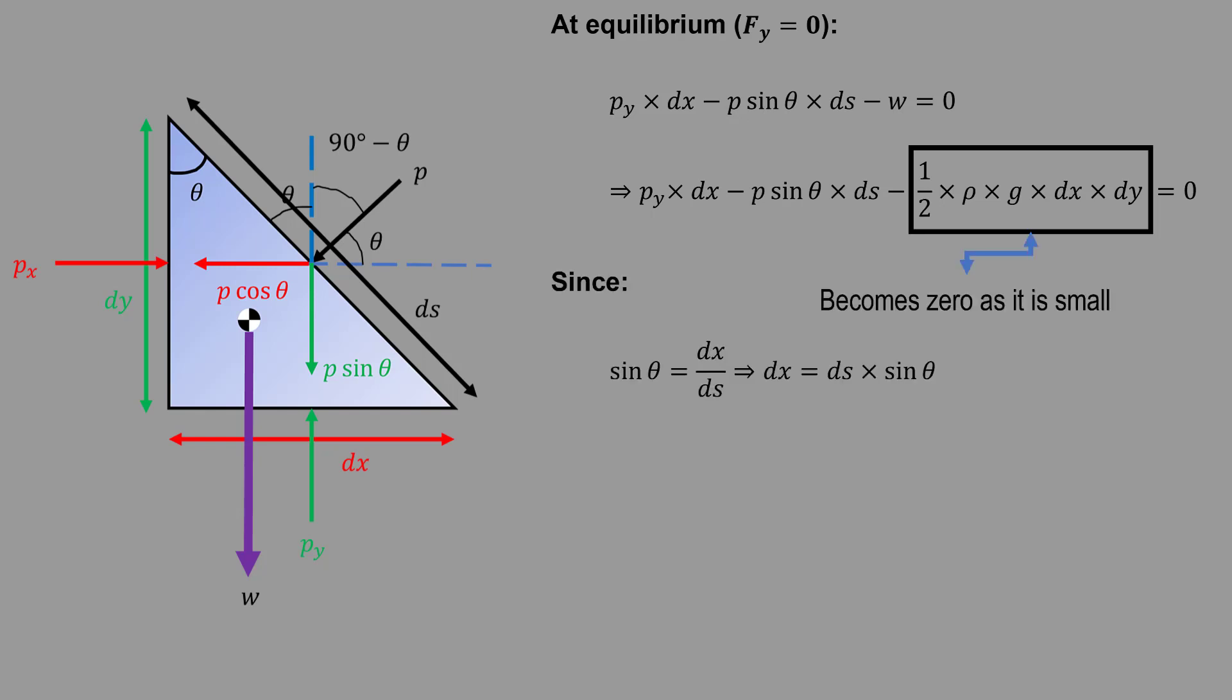From the diagram, sin theta equals dx by ds, hence dx equals ds sin theta. Finally, the equation will be reduced to Py dx minus P dx equals 0, which is P equals Py.